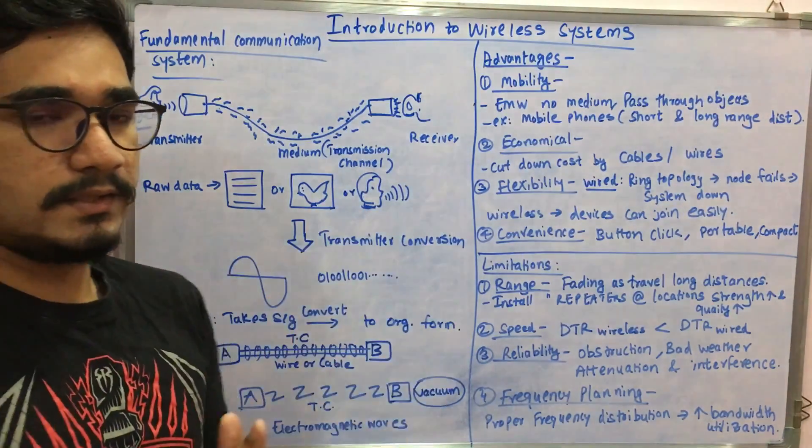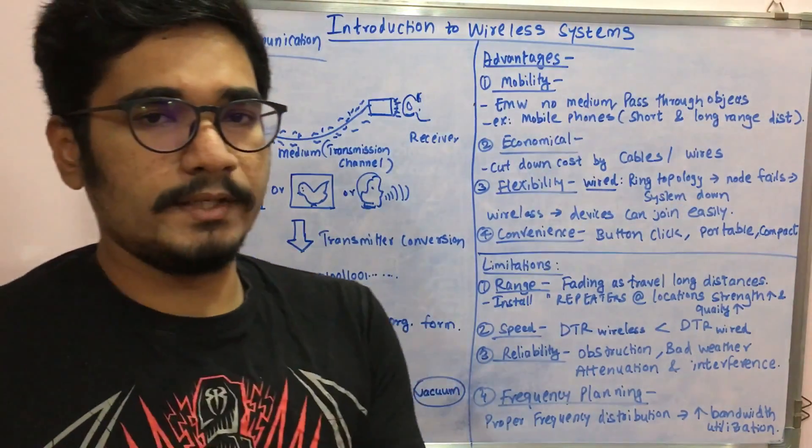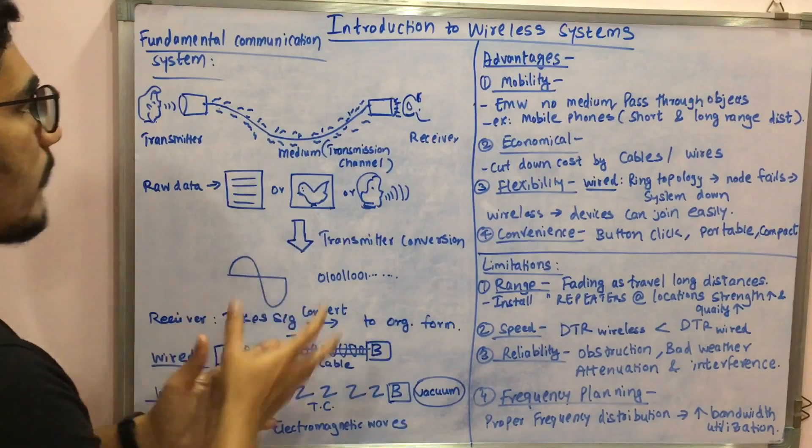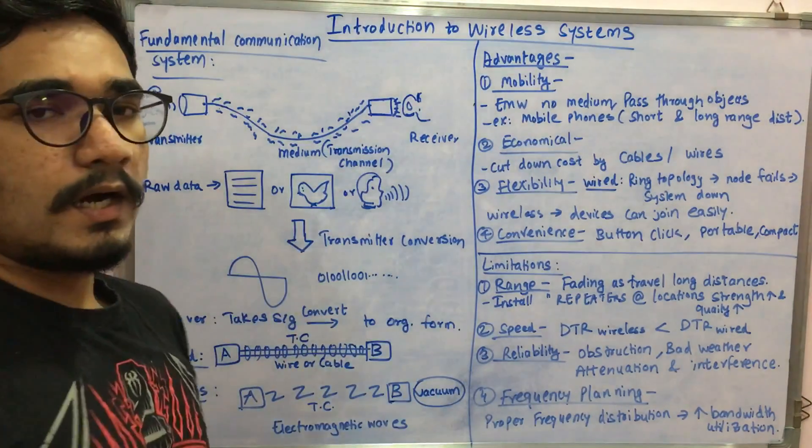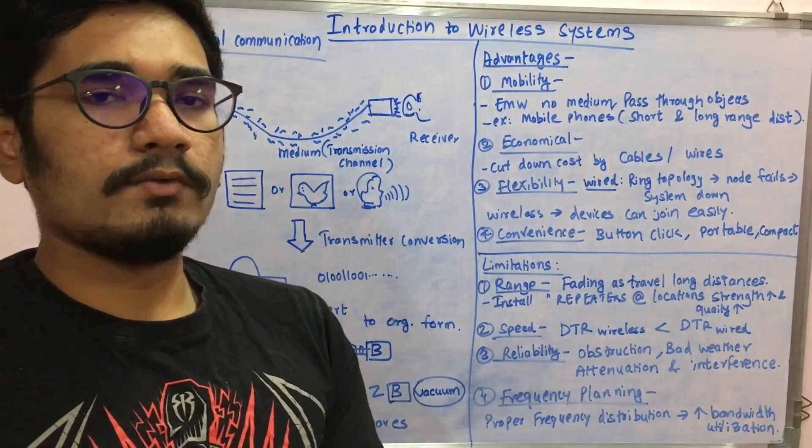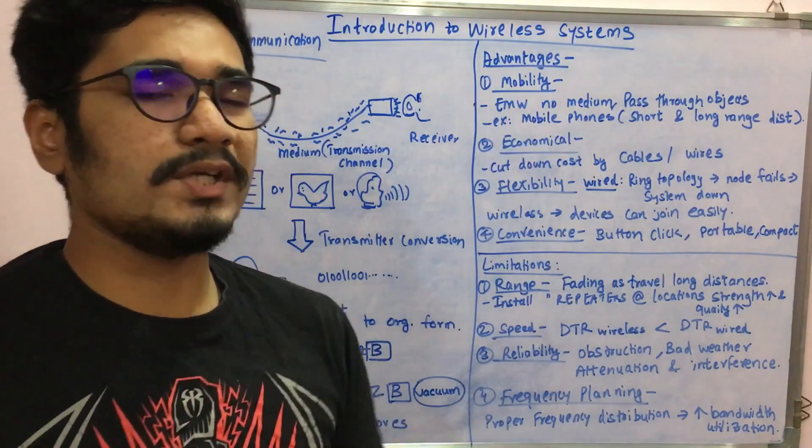It converts into either AC or DC signals or into various bits, binary codes. Then finally, receiver gets that and it has its own conversion mechanism or a kind of decoding mechanism where it converts back to the original format whether it is in text format, image, or speech.